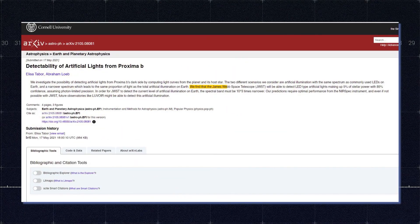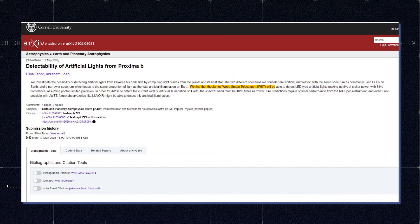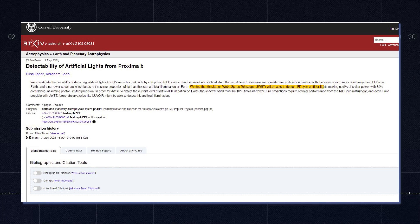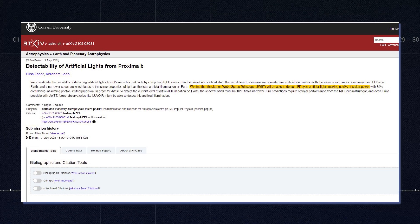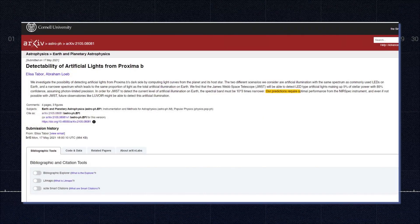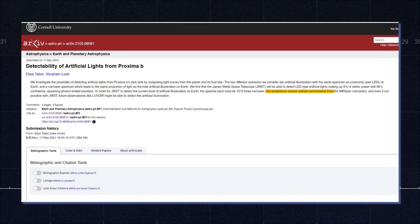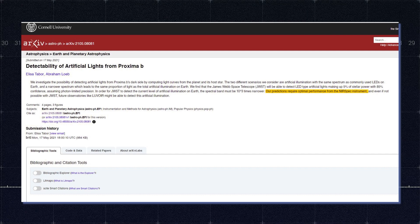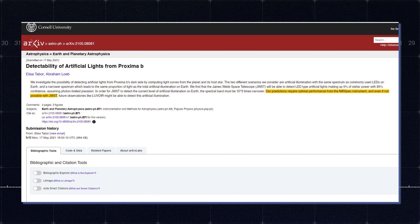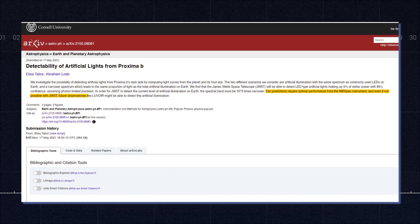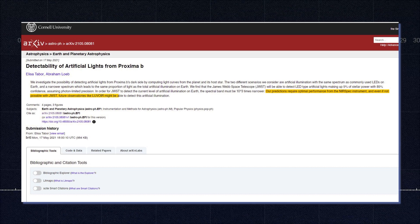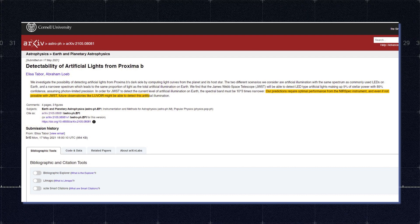We find that the James Webb Space Telescope will be able to detect LED-type artificial lights, making up 5% of stellar power. Our predictions require optimal performance from the near-infrared spectrograph instrument, and even if it's not possible with JWST, future observatories like Louvois might be able to detect this artificial illumination.